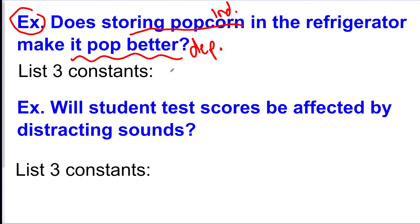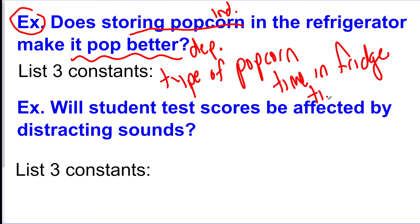Some constants in here: we could say the type of popcorn, we could say the amount of time in the refrigerator, we could say time in the microwave. So really the list can go on forever. The only thing you can't write for the constant is putting it in the refrigerator because that's the one thing we're testing.